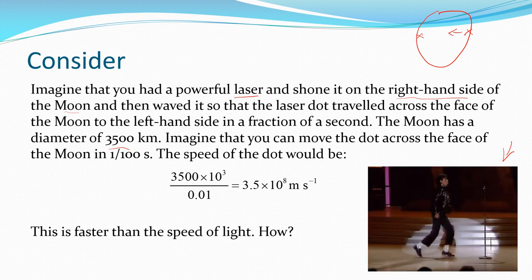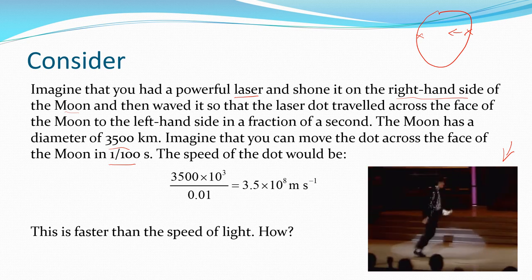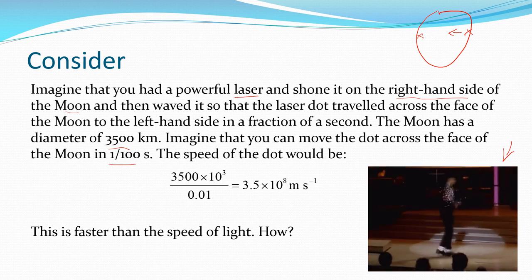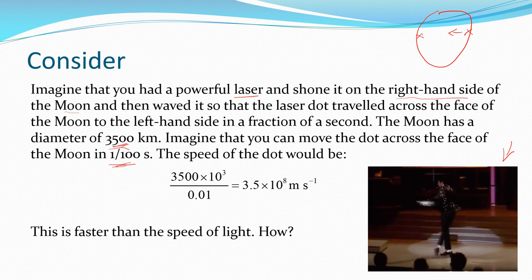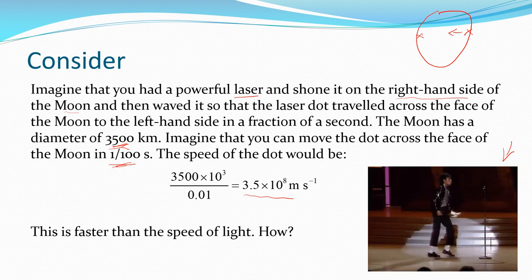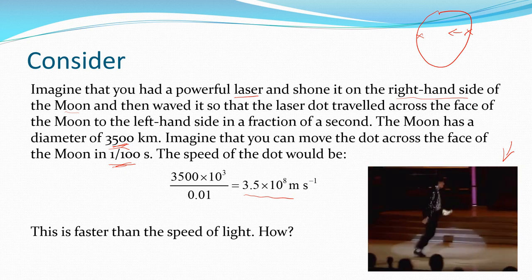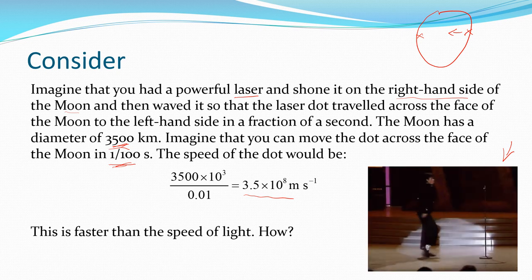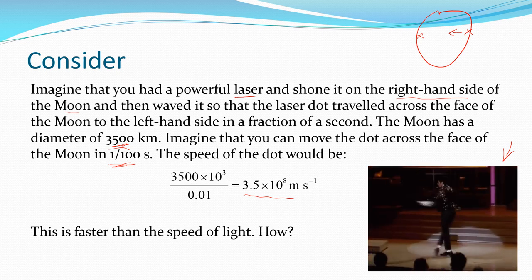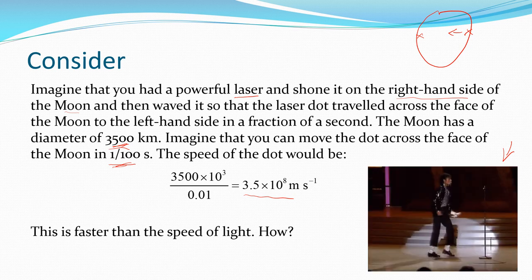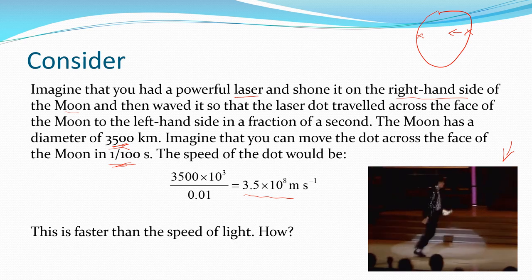If the moon has a diameter of 3,500 kilometers and you can move that dot across the face in a hundredth of a second — because it's easy to just change the angle slightly here on Earth — then 3,500 km divided by a hundredth of a second means the dot would travel across the surface of the moon at 3.5 × 10⁸ m/s. The speed of light is only 3 × 10⁸ m/s. How can we be faster than the speed of light?